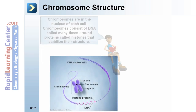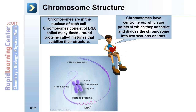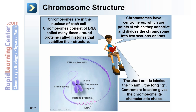Chromosome structure. Chromosomes are in the nucleus of each cell and consist of DNA coiled many times around proteins called histones, which stabilize their structure. Chromosomes have centromeres — points at which they constrict — dividing the chromosome into two arms: the short arm labeled the p-arm and the long arm, q. Centromere location gives the chromosome its characteristic shape. Notice how histone proteins wrap and align with the DNA molecule — this is often referred to as beads or pearls on a string.